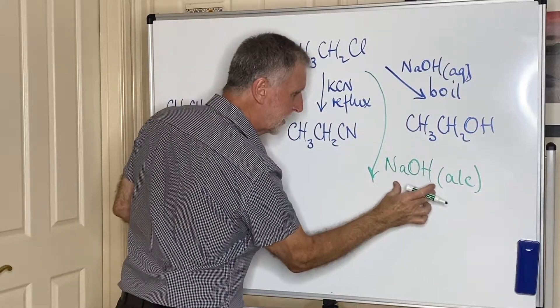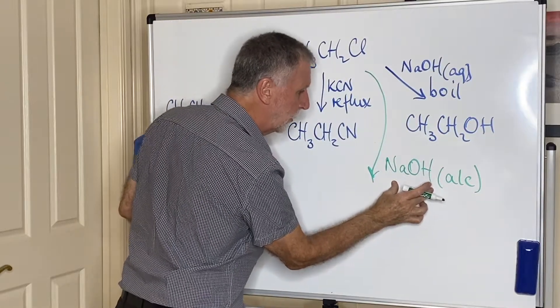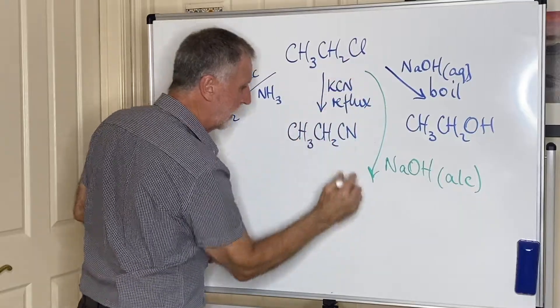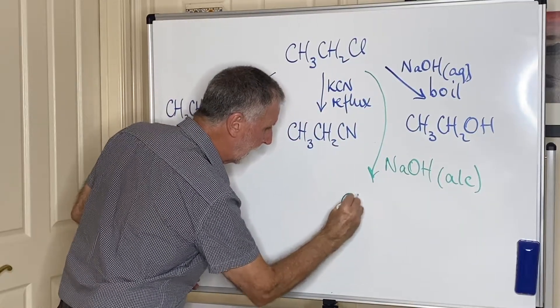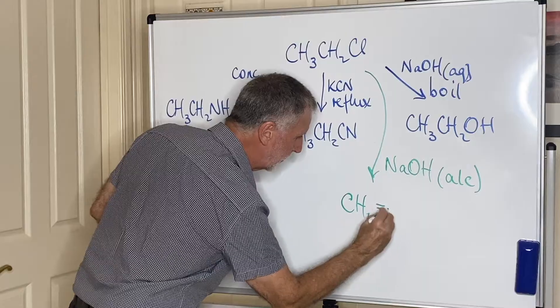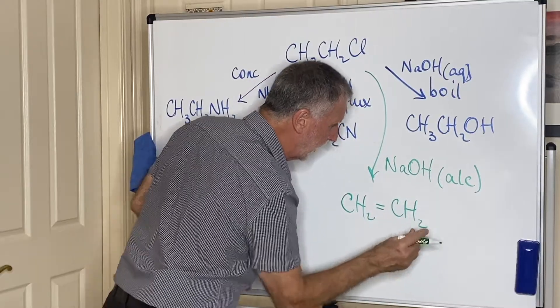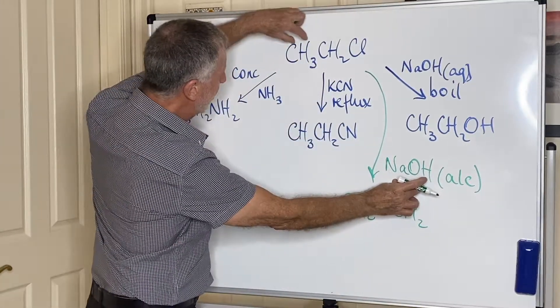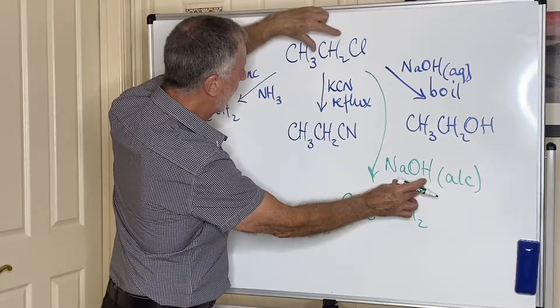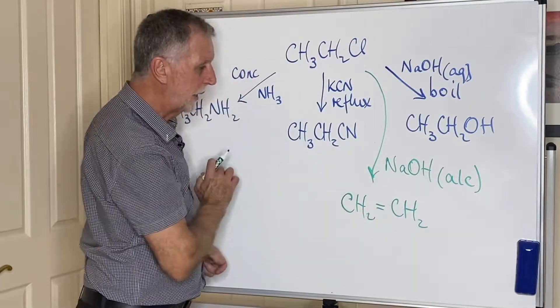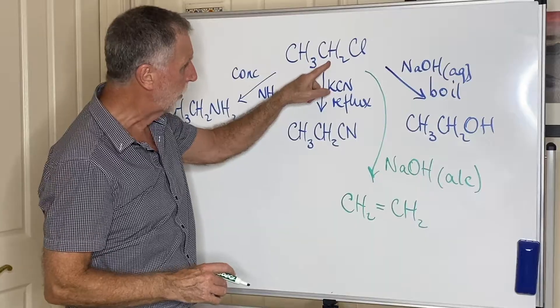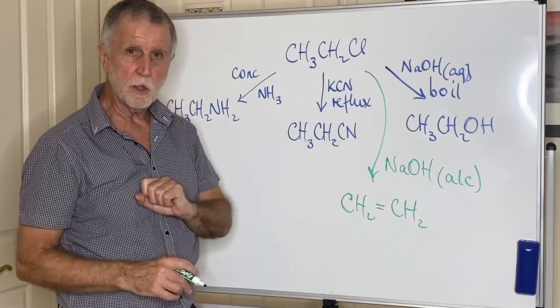this acts as a base, and it actually removes an acid, HCl. So you form the alkene, CH2, CH2. So what this has done is taken HCl away and left a double bond behind, turning the chloroalkane into an alkene.